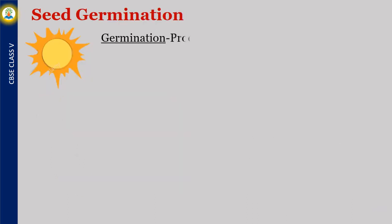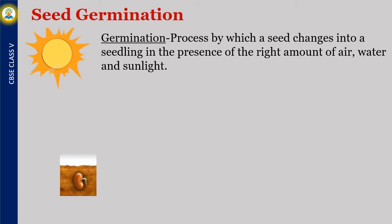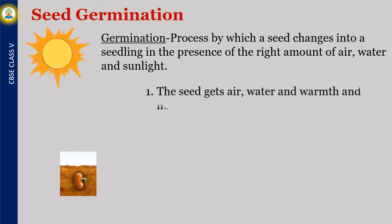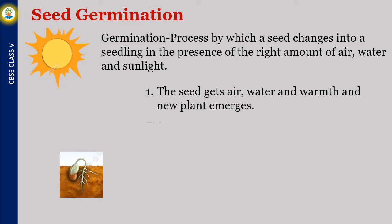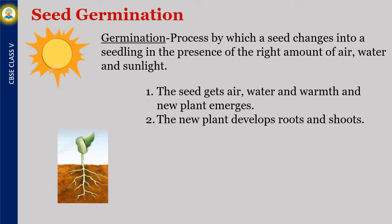Seed germination is the process by which a seed changes into a seedling in the presence of the right amount of air, water, and sunlight. The seed gets air, water, and warmth and a new plant emerges. The new plant develops roots and shoots, and the shoot then develops leaves.